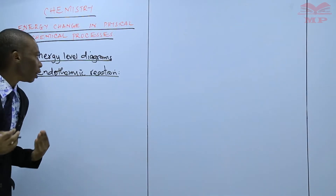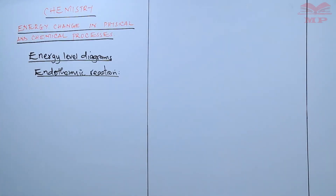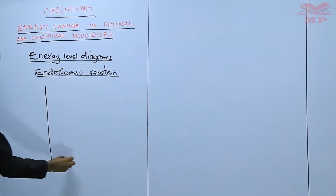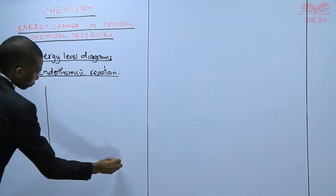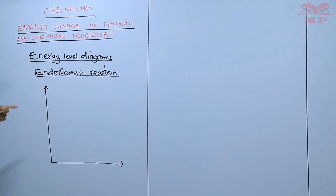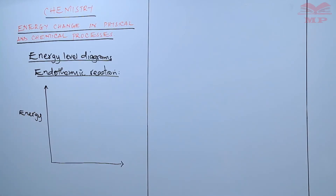An endothermic energy level diagram will look like this. On the y-axis, we have the energy level diagram. This energy is measured in joules.